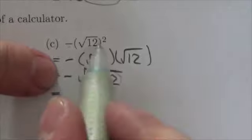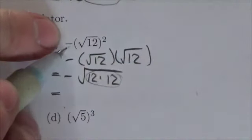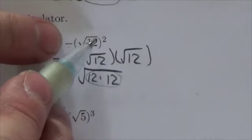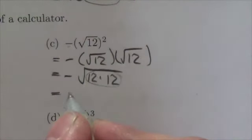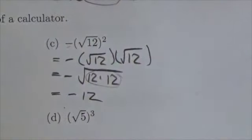The negative has not been affected by anything there because it sits outside the parentheses. That 2, the square there, only affects what's inside the parentheses. So this is going to end up being negative 12 at the very end.